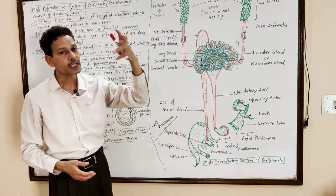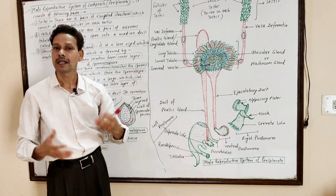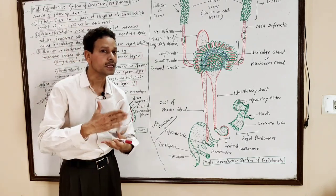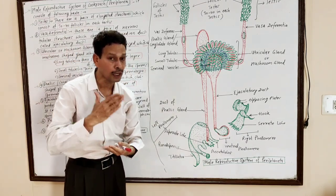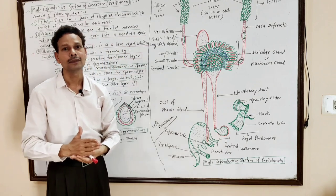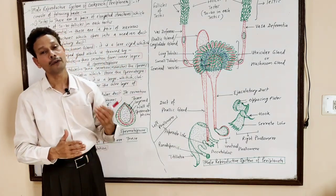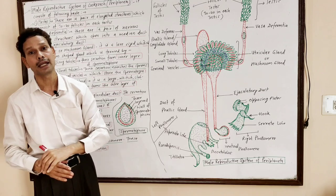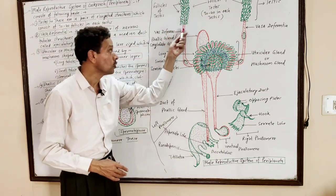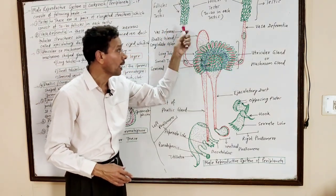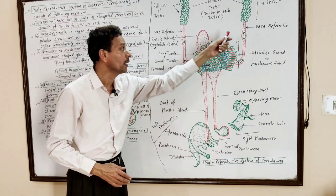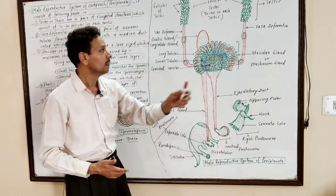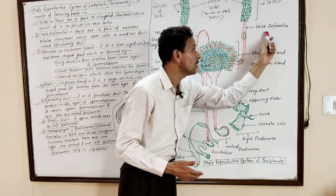The lining of the testis follicles is the germinal epithelium, which is involved in the formation of spermatogonia — the male sex cells. These spermatogonia are carried via fine ducts, a pair of ducts named vasa deferentia.